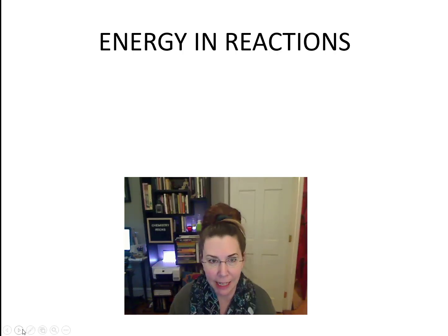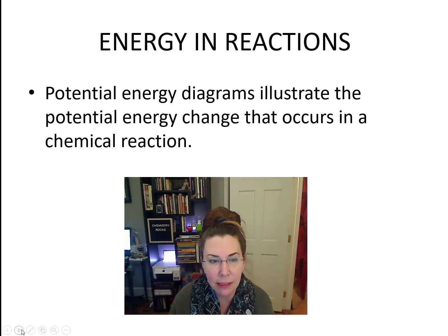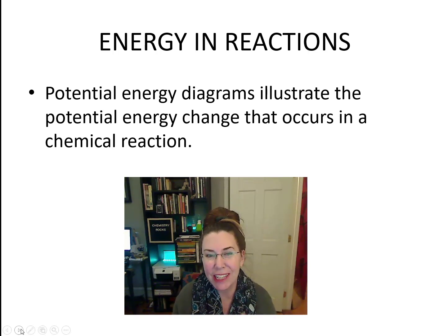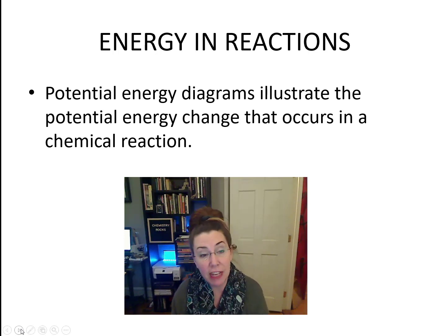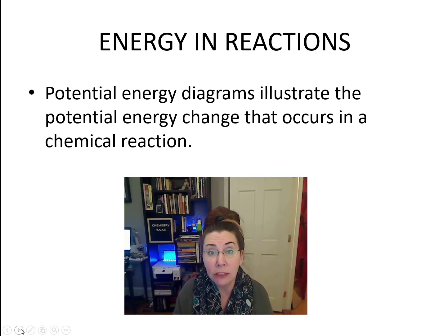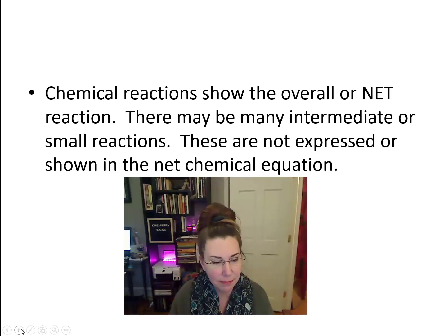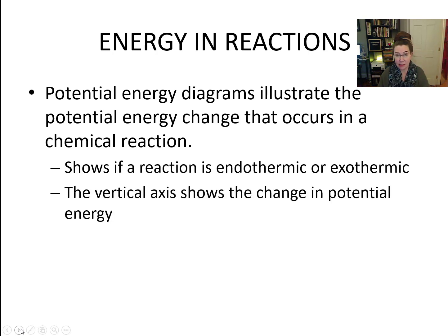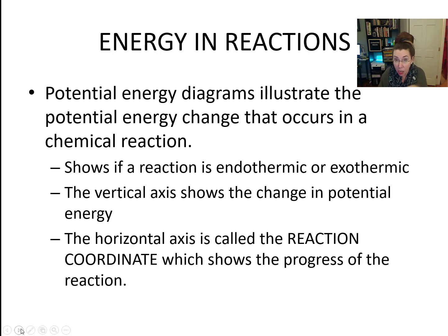Let's talk about energy in reactions. The way that we can show the energy in a chemical reaction is by using a potential energy diagram. We used heating curves to show you the energy in physical changes, in the physical change of a phase change. Now we're going to be using potential energy diagrams to illustrate the potential energy change that occurs in a chemical reaction. The vertical axis will show us the change in potential energy. The horizontal axis, we refer to as the reaction coordinate, and it shows the progress of our reaction over time.